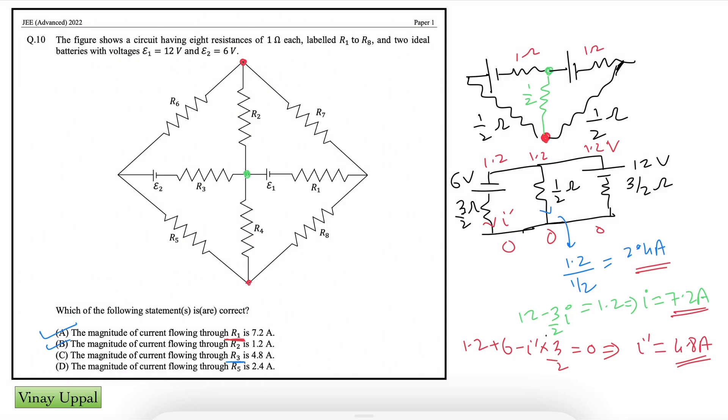Option C, what is R3? Where is R3? It is connected to the E2 battery, 6V battery. So how much is the current in the 6V battery? 4.8. So therefore, option C is also correct.